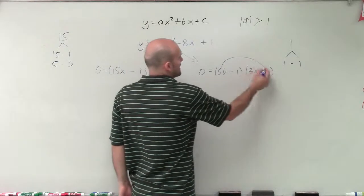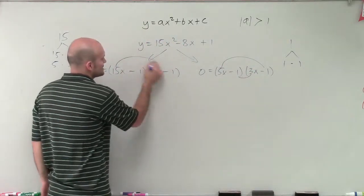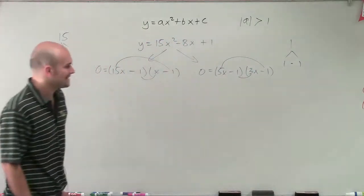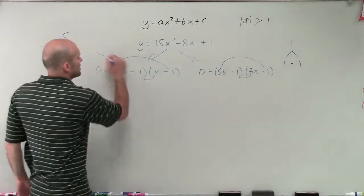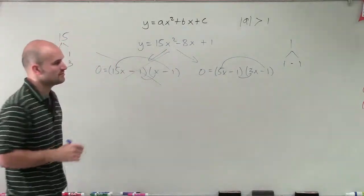Well, when I multiply the outer and the inner for both of these, the only equation that gives me negative 8x is right here. So therefore, this is not a factored form of it.